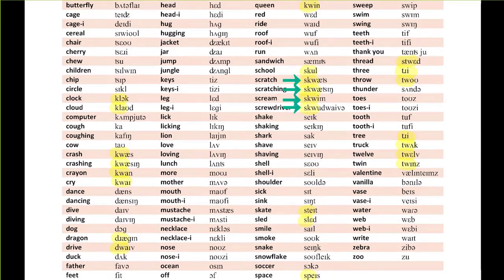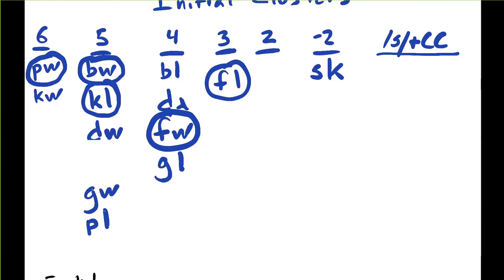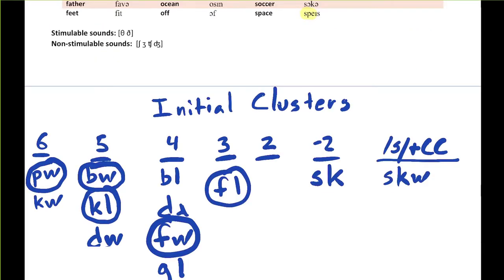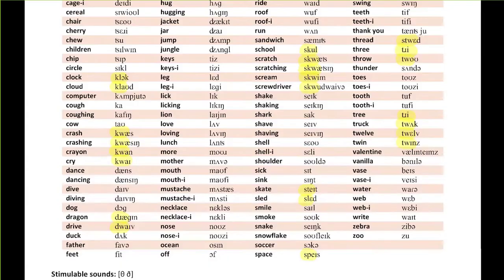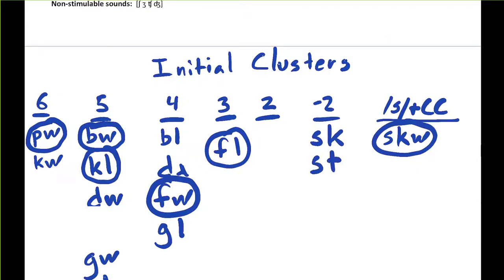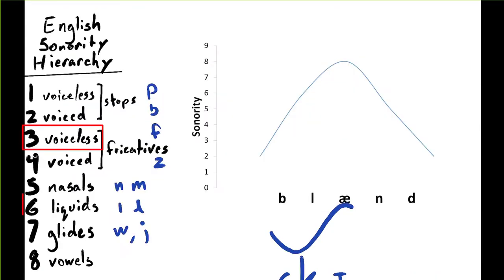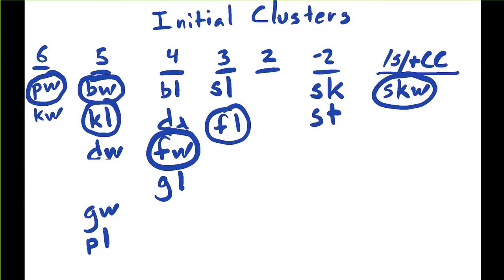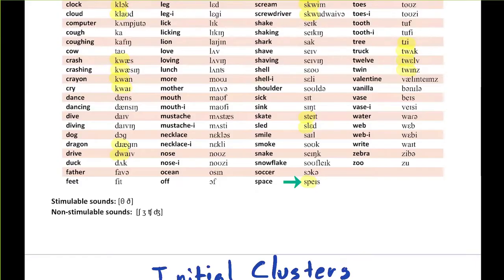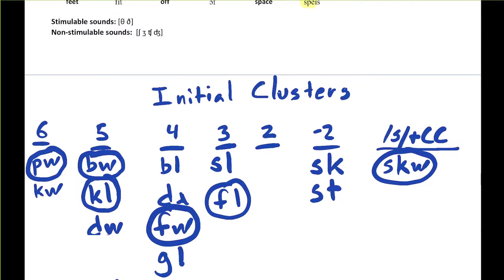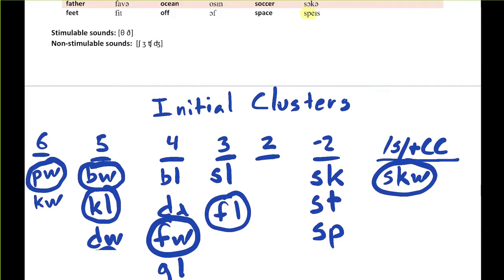Here we have some three element clusters. SKW, which occurred more than once. We have one ST cluster, another negative 2 sonority distance adjunct cluster. SL, that's a voiceless fricative and a liquid, sonority distance of 3. SP, another negative 2 cluster. We have another instance of SP, so we're going to circle that. Two instances of SPL, that's a three element cluster.